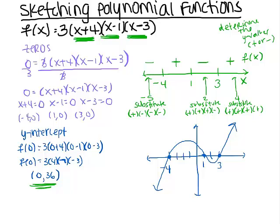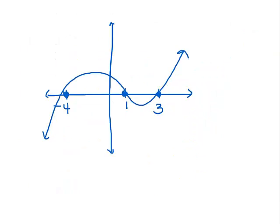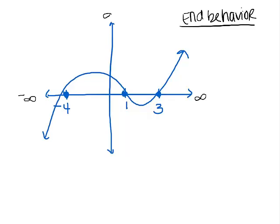Now there are a couple of questions we have to ask ourselves. What's the end behavior of this graph? When I ask about end behavior, I'm asking what is the graph doing towards the ends — meaning when x goes towards infinity and when x goes towards negative infinity. In other words, as x gets really, really big or really, really small, what is the graph doing at those places?